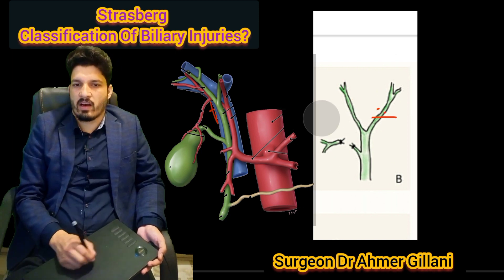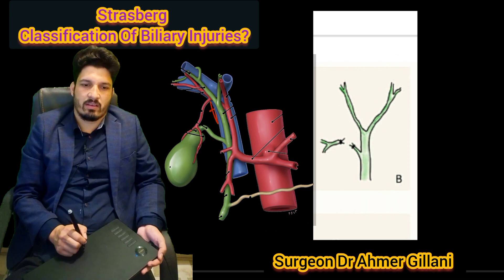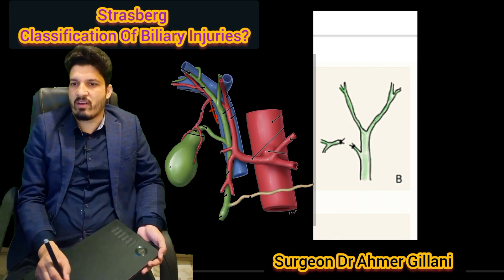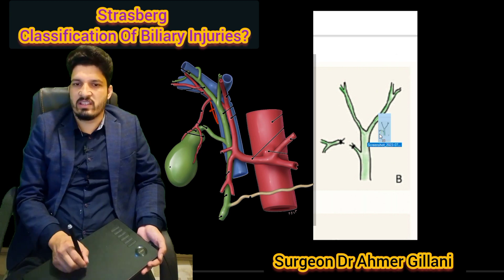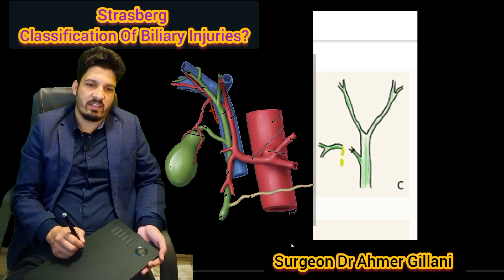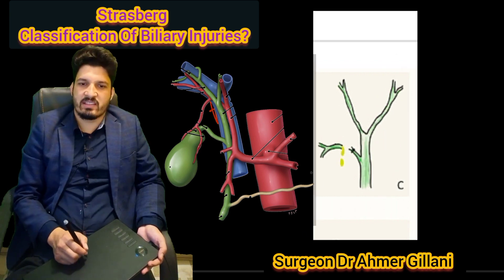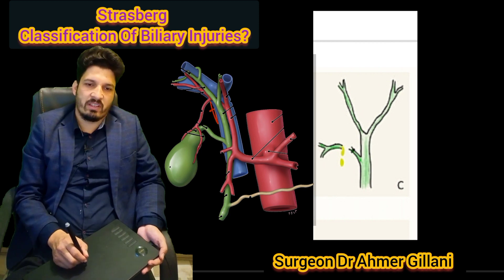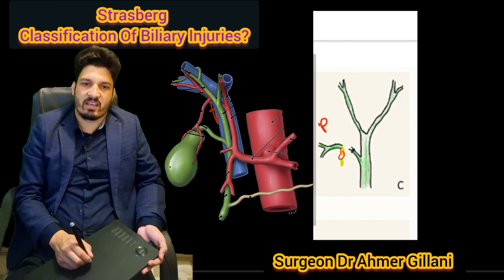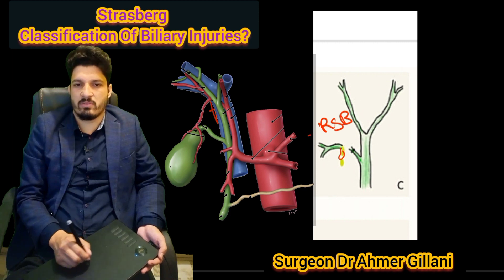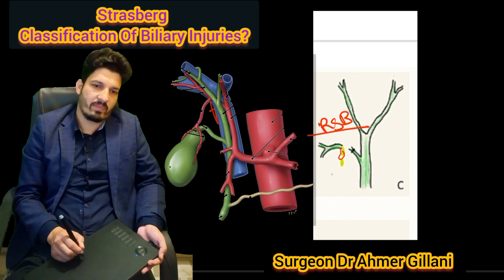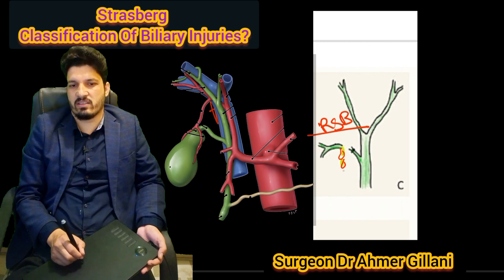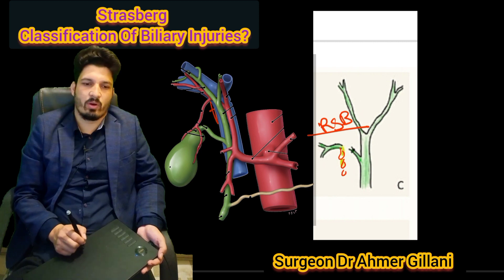After that, we have Type C. Basically, this is the bile leak from the right segmental branch of the bile duct. I am clearly demarcating this on the diagram.